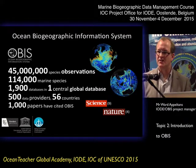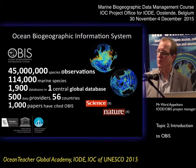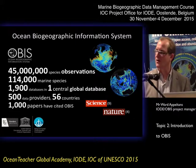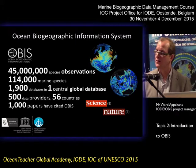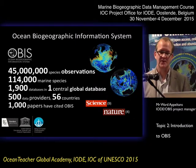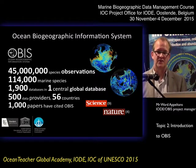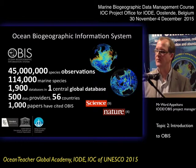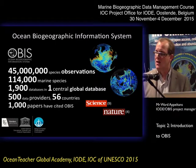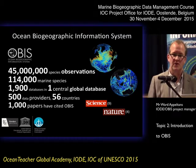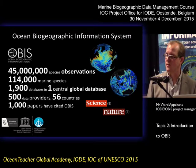I have to start my presentation with this slide to give you an idea of the extent of OBIS. At the moment we have 45 million observations, and we are adding about 2 to 3 million per year. About 114,000 marine species. At the moment we have integrated 1,900 databases, and we have 500 institutions providing data in 56 countries. A bit more than 1,000 papers have cited OBIS, and some of them are really high impact journal papers.